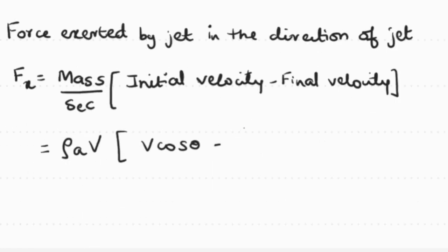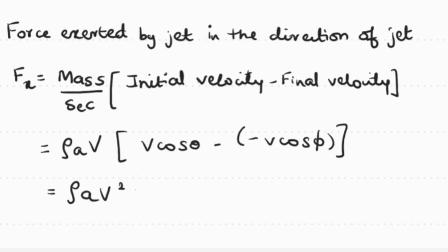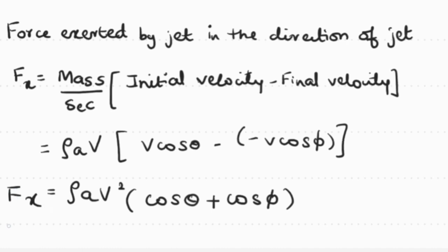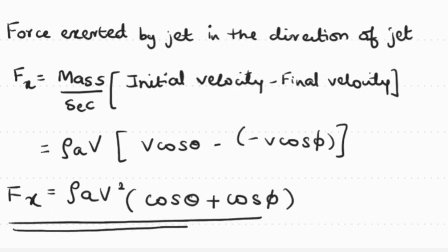Substituting and taking common factors: Fx equals rho times A times V squared times (cos theta plus cos phi). The minus of minus gives a plus for the cos phi term. This is the equation for the force exerted in the x-direction when the plate is unsymmetrical.